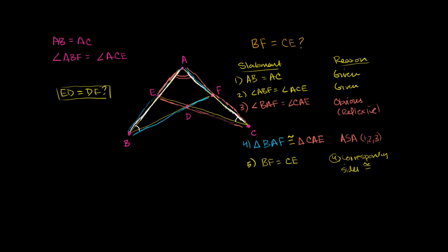We know that triangle BAF is congruent to triangle CAE. So from those two congruent triangles, side AE — which is part of triangle CAE — is going to be equal to AF. These two sides are congruent because they are corresponding sides of congruent triangles. AF is the side opposite the white angle in triangle BAF, and AE is opposite the white angle in triangle CAE, which we know are congruent. So AE equals AF, from statement four.